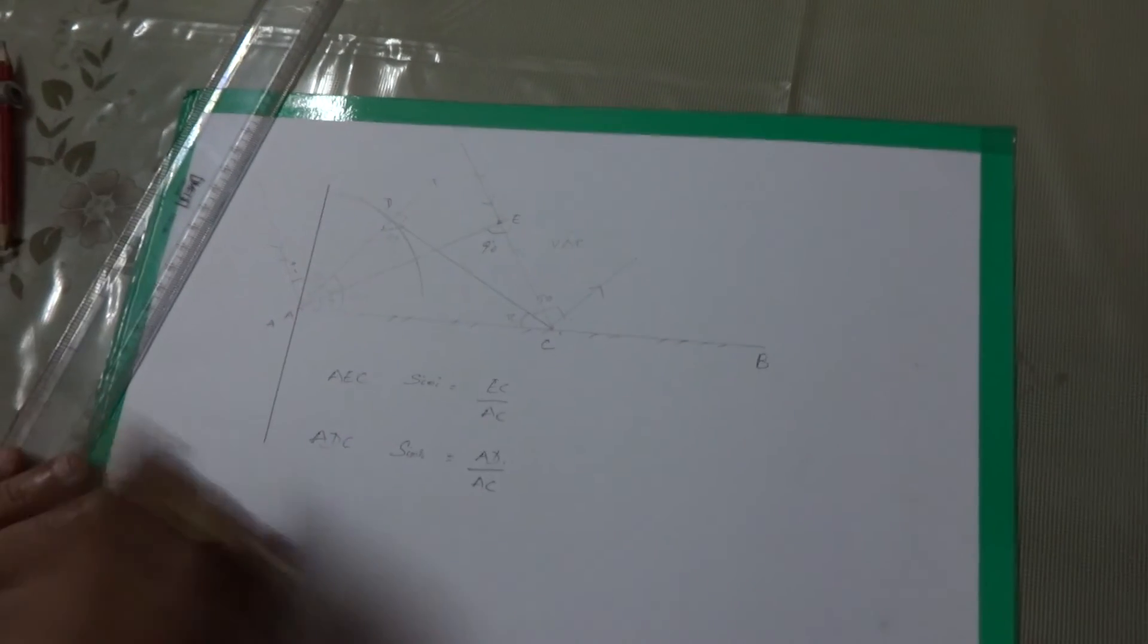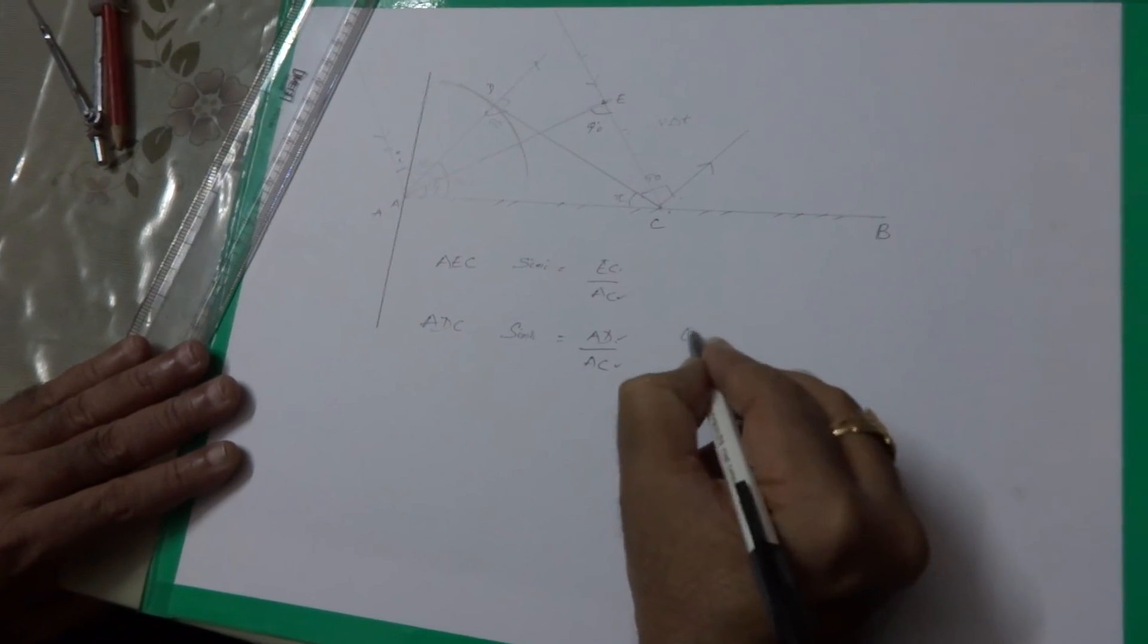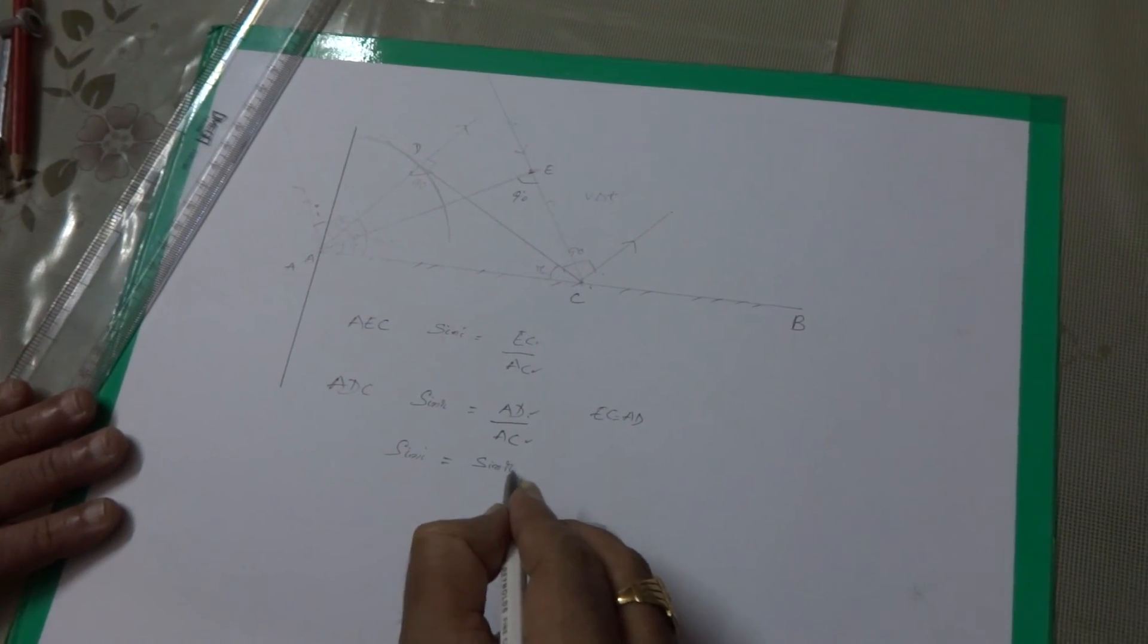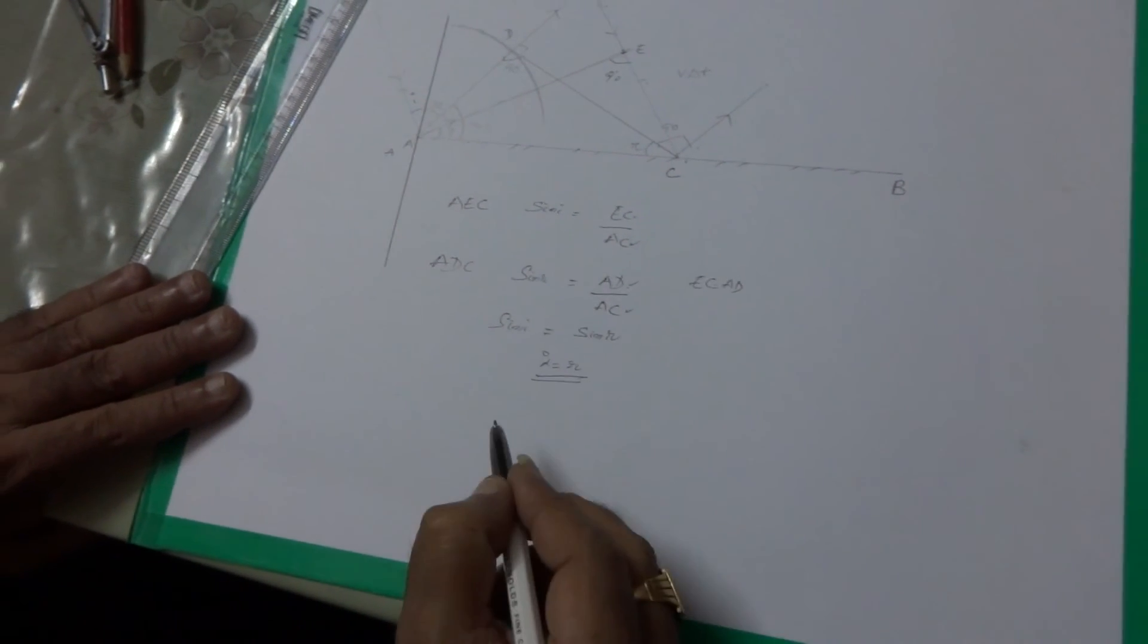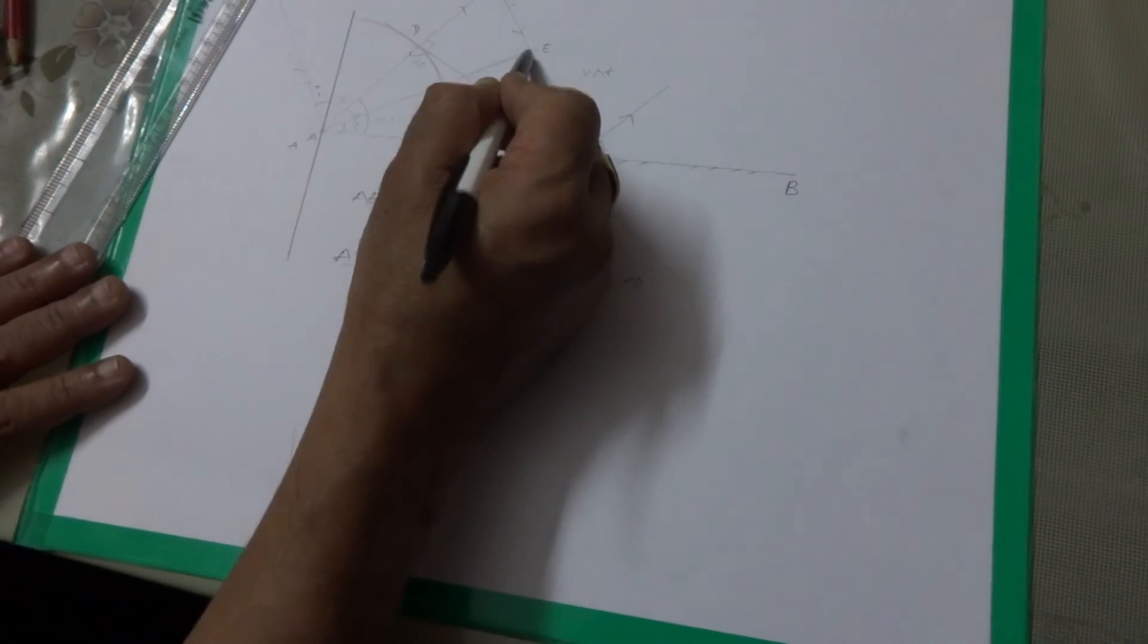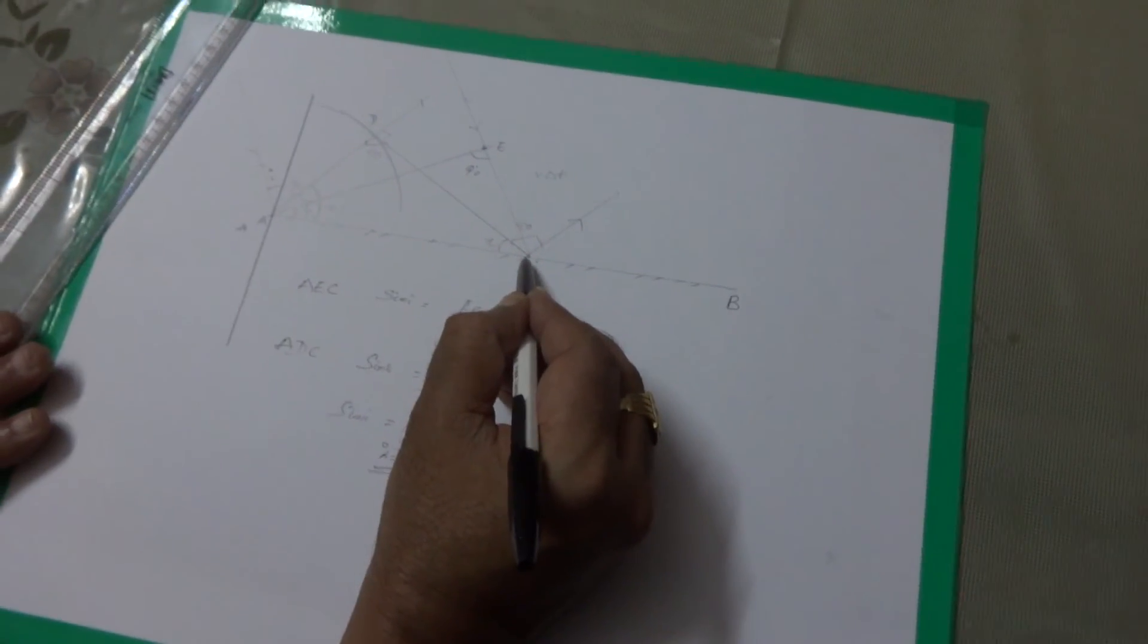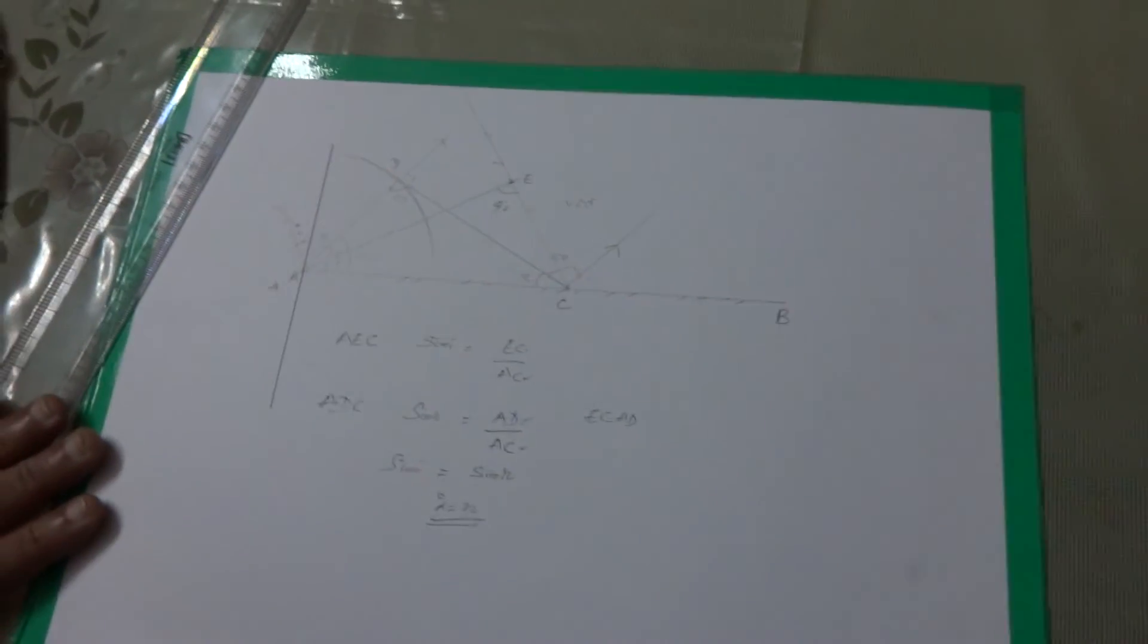When already the denominators are same, EC is equal to AD by which of our construction, then we can say sine I is equal to sine R, which tells me I is equal to R. In fact, suppose if this distance is not equal to this distance, that means what does it mean? Once this incident wave front hits this mirror, after hitting this mirror again, a reflected wave front is to be constituted.